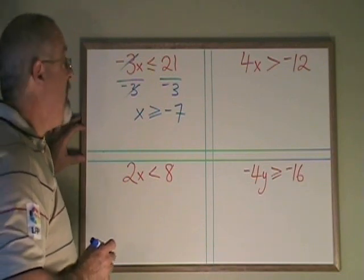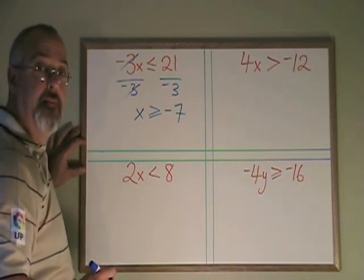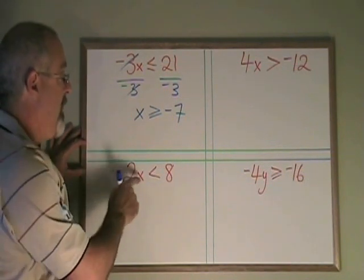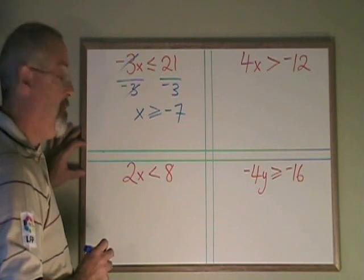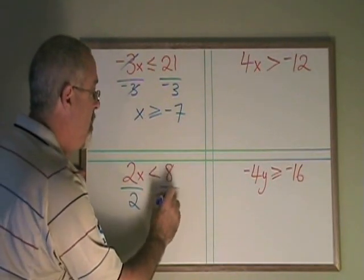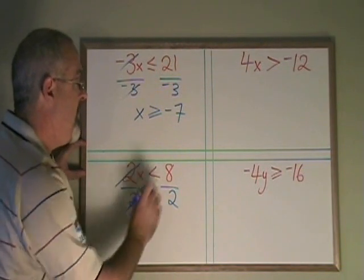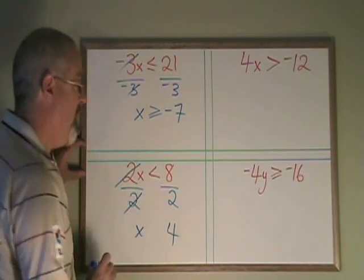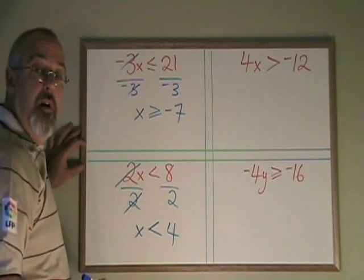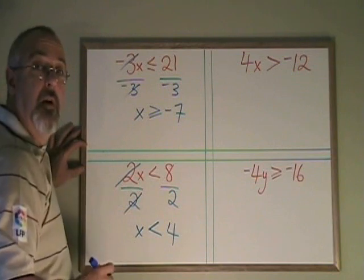This only happens if we are dividing both sides by a negative number. Let's look at another example. 2x is less than 8. My x is being multiplied by a 2, so I divide both sides by a 2. These cancel. My x is isolated. 8 divided by 2 is 4, and my less than symbol is copied down. I do not turn it backwards because I divided both sides by a positive number.